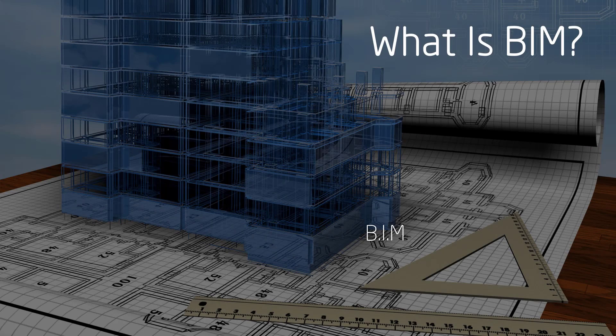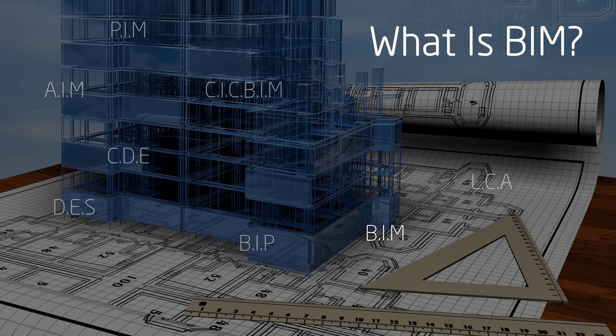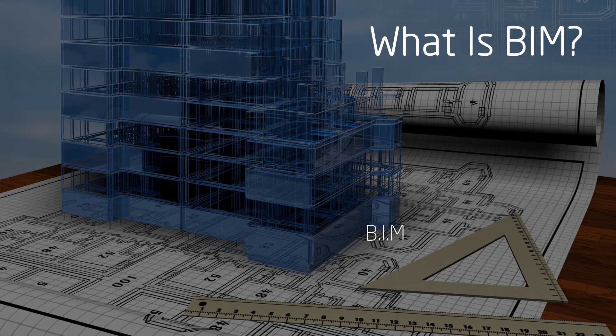So what is BIM? It's basically three letters that are designed to scare the uninitiated. Just like all these others appearing on screen, there are a lot of acronyms when it comes to building information modelling, and that's all that it is — BIM is just another acronym. In fact, all these acronyms you can see came from a document from the NBS, the National Building Specification website, listing the 20 acronyms you must know to understand BIM. Thankfully, we're just looking at one part of it today.